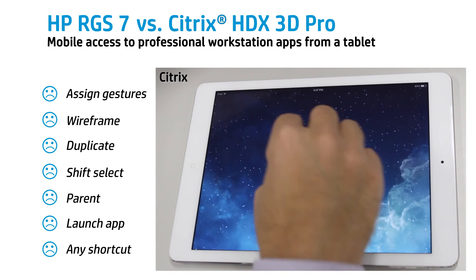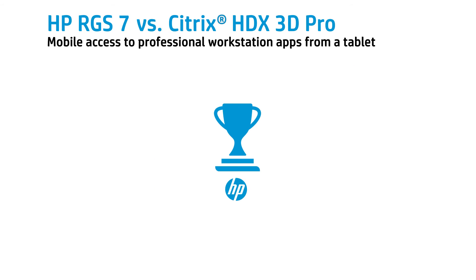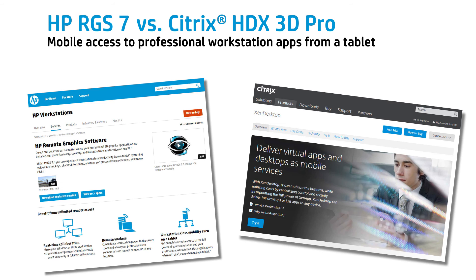With Citrix, you can't. HP RGS is the clear winner in providing mobile access to workstation applications, and that makes sense. While Citrix has had their iPad receiver for many years, HDX 3D Pro is a feature of their VDI solution that's overwhelmingly focused on the average PC user. HP RGS was first launched over 10 years ago in HP's workstation division and has had a laser focus on graphics-intensive professional workstation customers ever since.